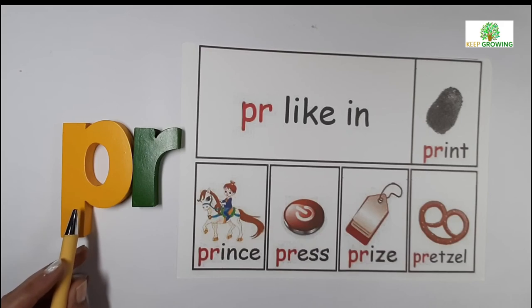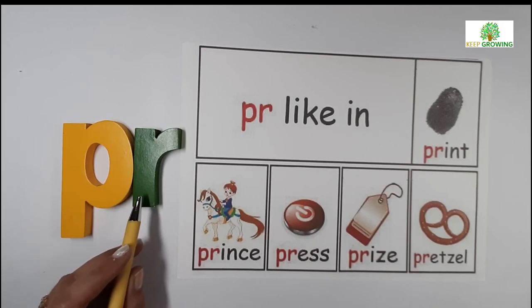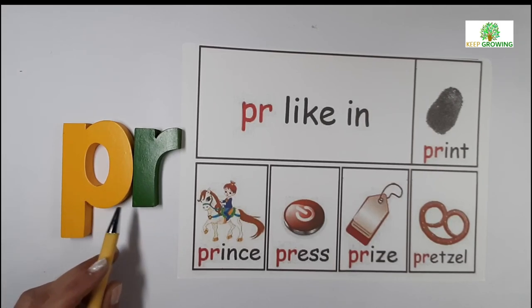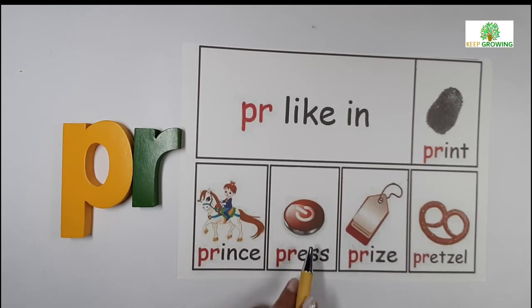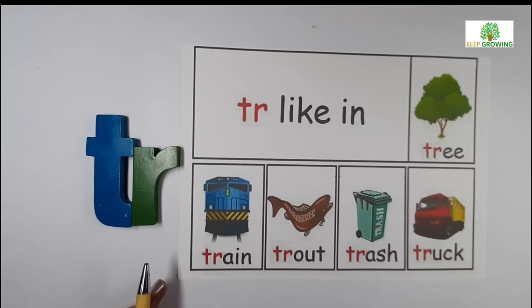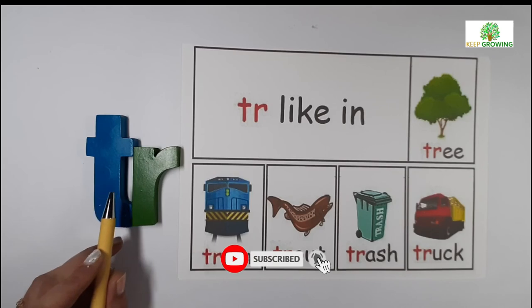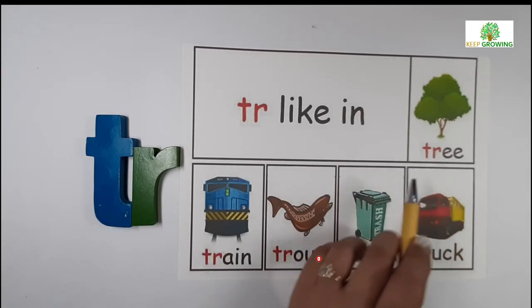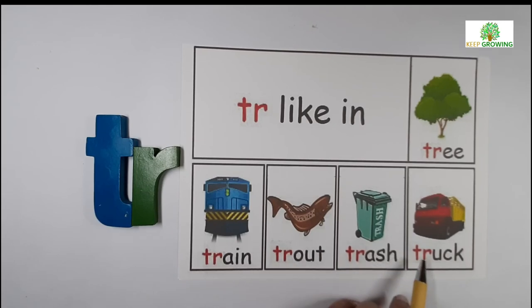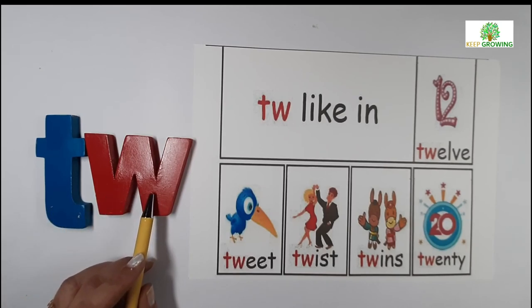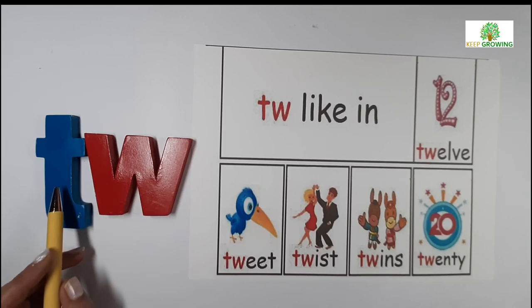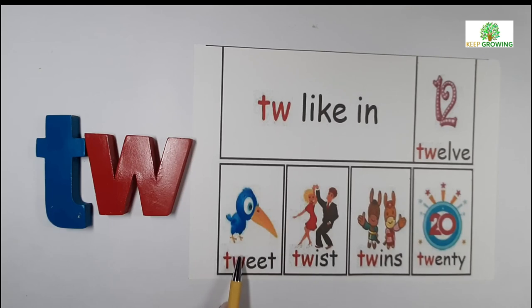P sounds P, R sounds R — PR. The blend of PR gives the sound PR. For example: print, press, prize, pretzel. The blend of TR gives the sound TR. For example: tree, train, trout, trash, truck. The blend of T and W gives the sound TW. For example: twelve, tweet, twist, twins, twenty.